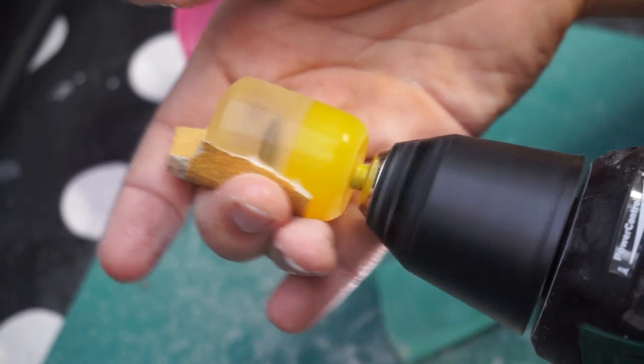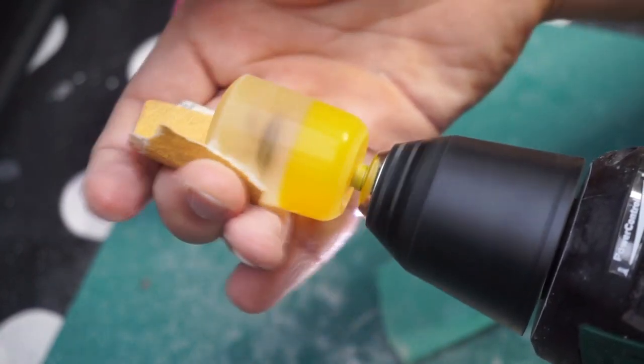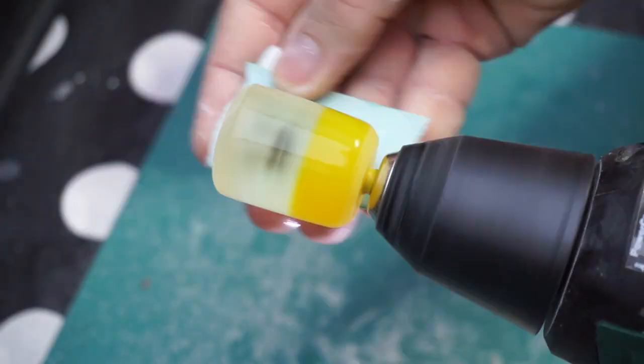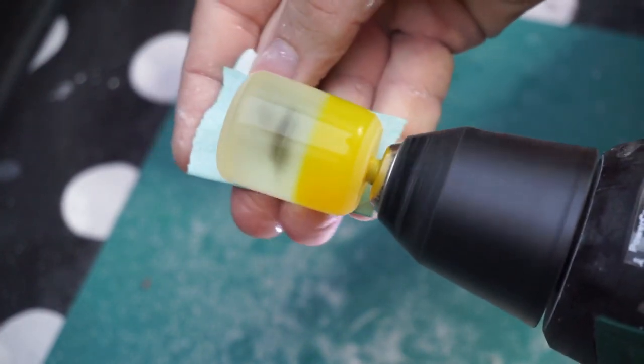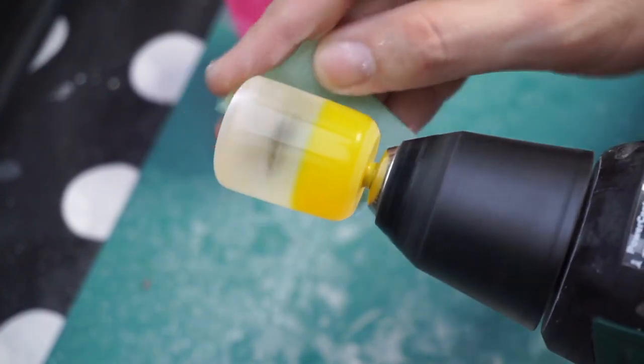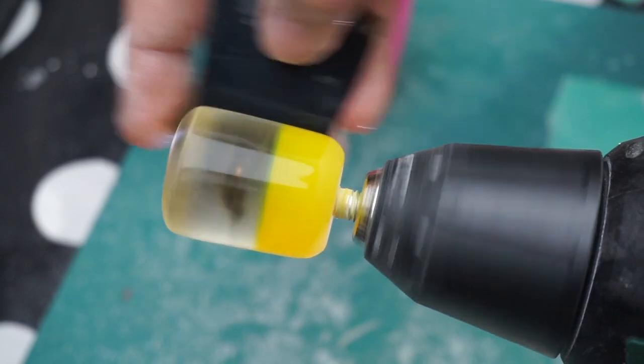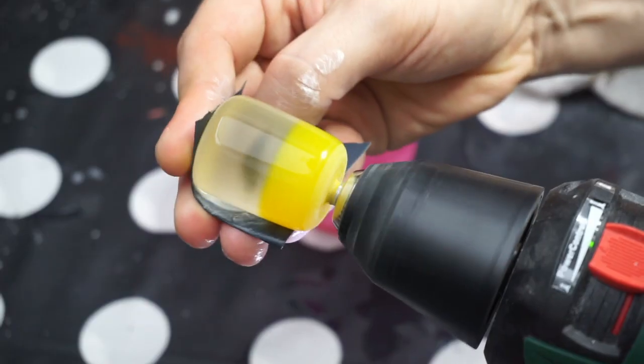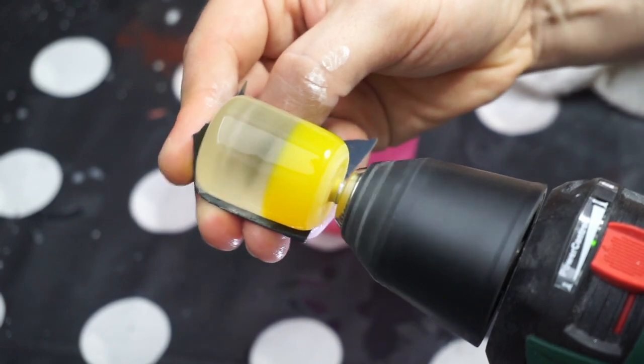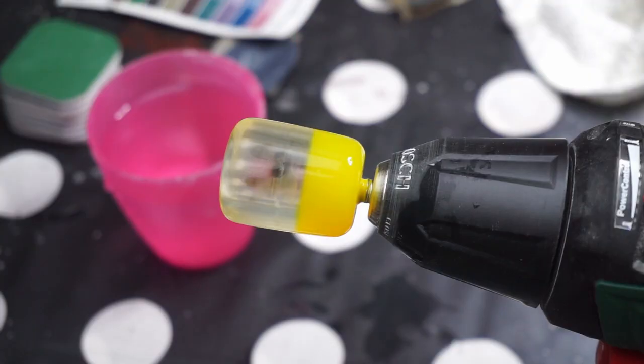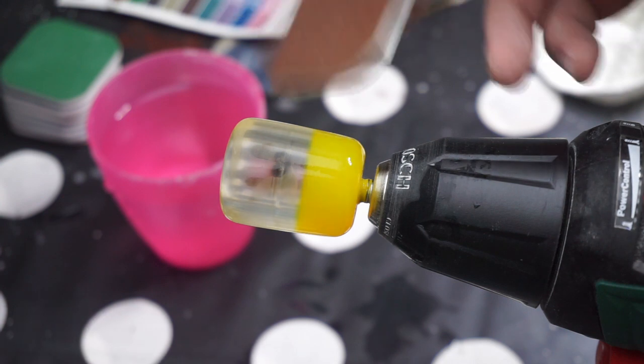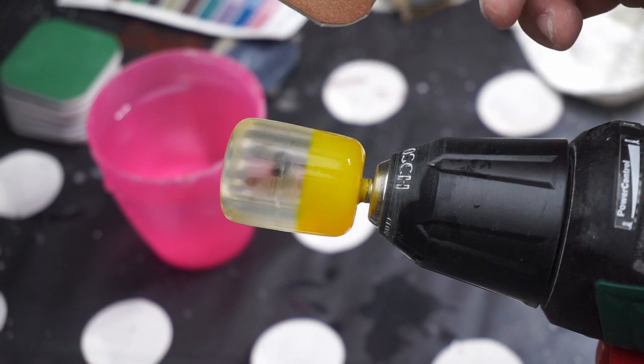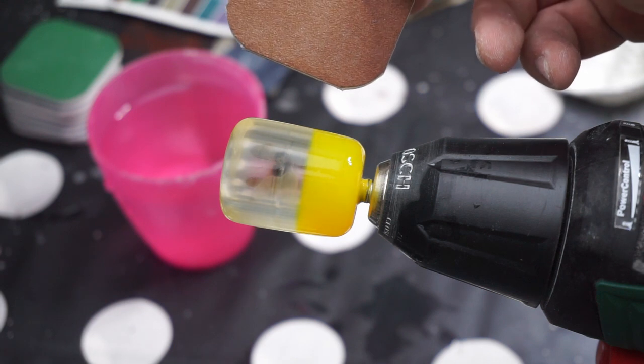And then the tedious part begins. I start sanding with 80 grit and work my way up to 1200 grit. And then I go over to micro mesh. Okay so it's time to use the micro mesh. We start with 1500 and goes all the way up to 12,000.